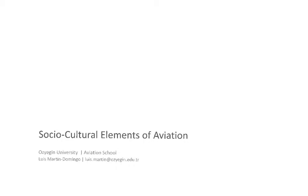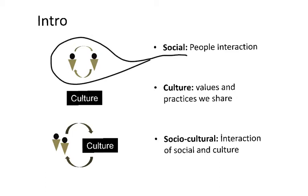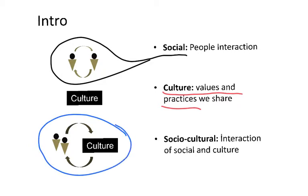This video introduces the socio-cultural elements of aviation. To understand socio-culture, it can be explained in two parts. First, it's social, referring to the interaction of people. Culture refers to the values and practices — what is acceptable and not acceptable, what is right and what is not right for each culture. Socio-cultural refers to the interactions of both society and culture.